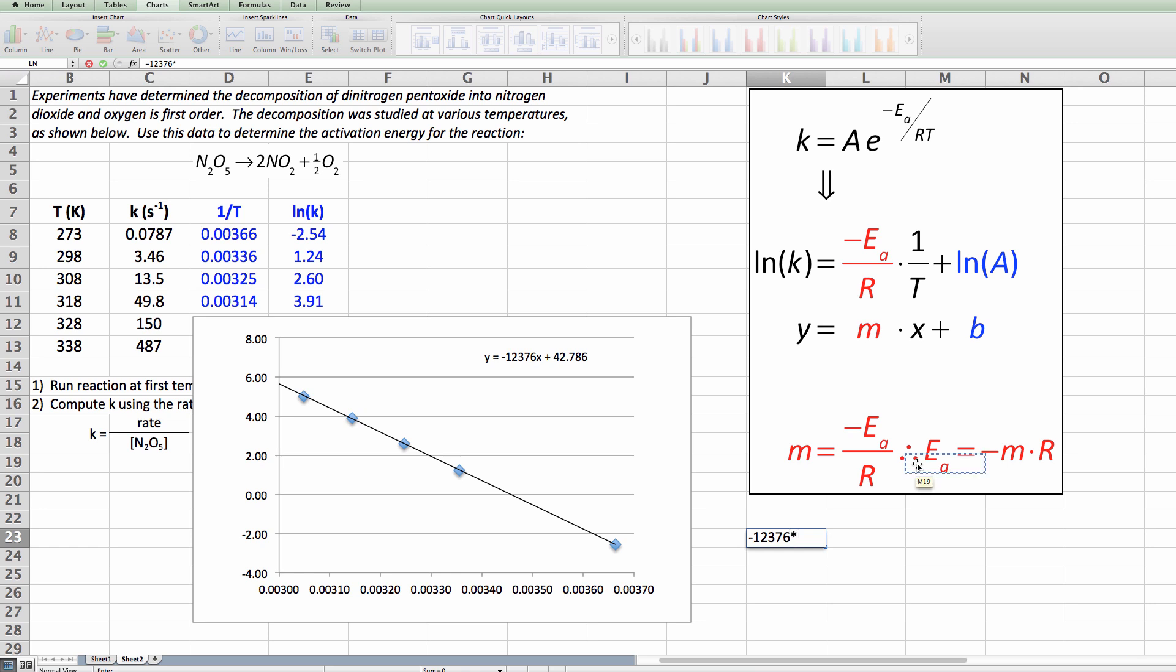I have to multiply that by 8.314 and I have to make sure this is a computation so I have to tell it that it's equal to this result and I get a very large looking number in joules per Kelvin or joules per mole. So what I could also do is I could divide this by a thousand and convert it to kilojoules and I find that my energy of activation or my activation energy is 102.